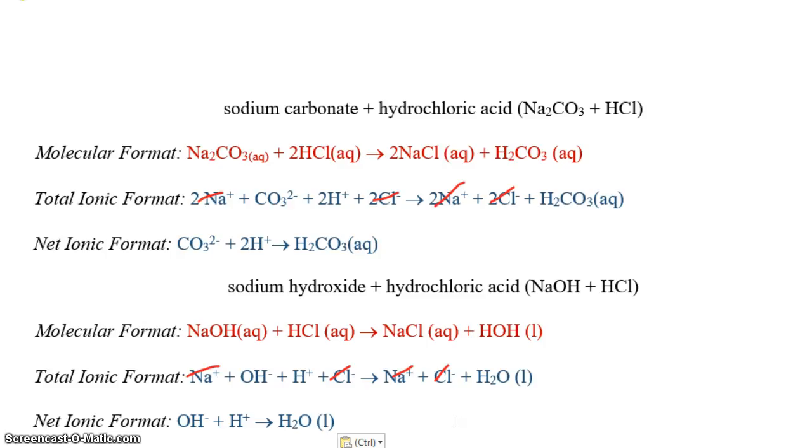This should be enough information for you to finish the rest of the equations in the post lab, and to do the pre-lab assignment. Make sure you read the pre-lab assignment. You don't have to do all this total ionic and net ionic for the pre-lab assignment, but you do have to write what the states are for all of the species in the reaction.